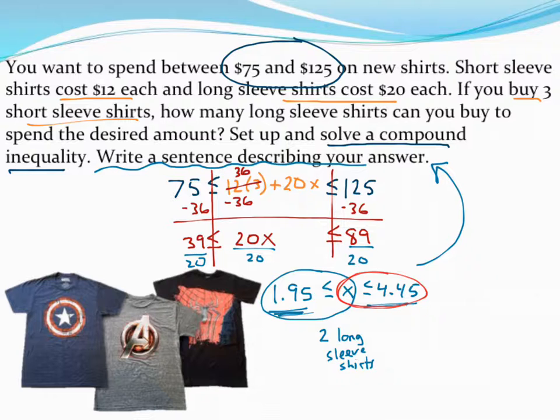I have to make sure that x, how many shirts I buy, is less than 4.45 shirts. Well again, I can't buy a decimal number of shirts. So at most, I can buy 4 long-sleeved shirts. I'm just going to put 4 long for right now. So that's going to kind of describe the range of shirts I can buy.